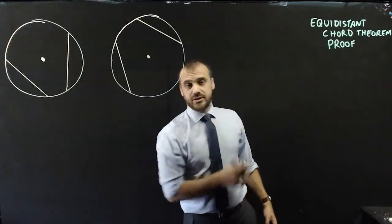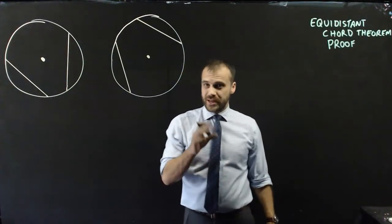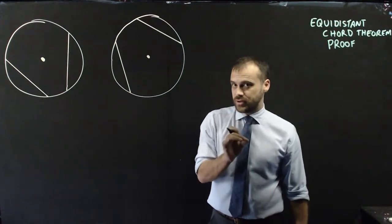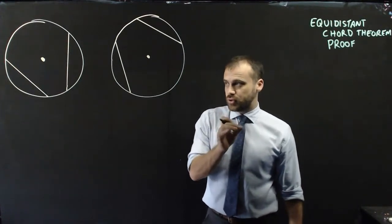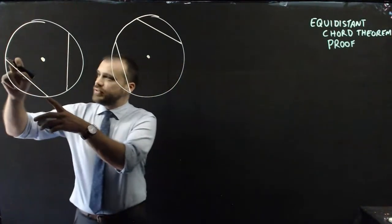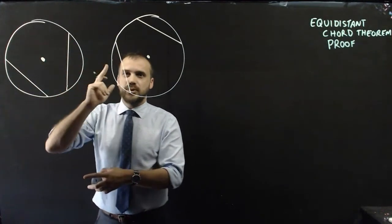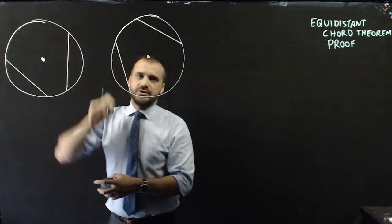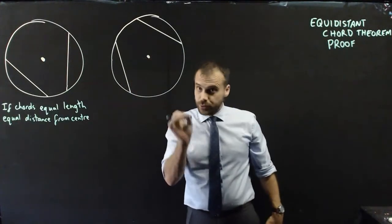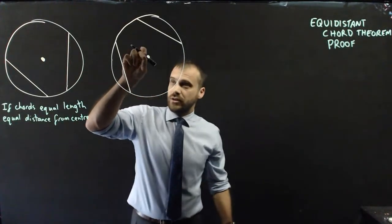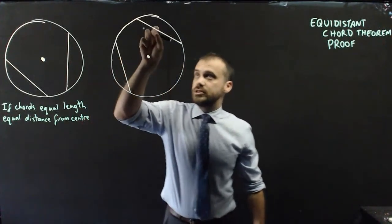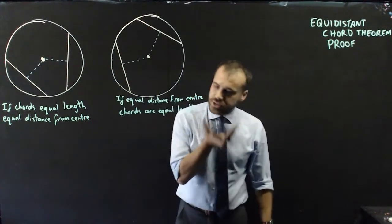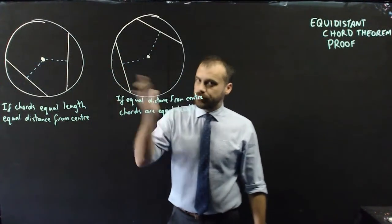In this video we're doing the equidistant chord theorem, and this is a two-for-one video because we're going to prove two things. First of all, we're going to prove that if these two chords have equal length then they are an equal distance from the center. We're also going to prove the converse: if they are an equal distance from the center then they will be an equal length. So my starting points are different in both proofs.